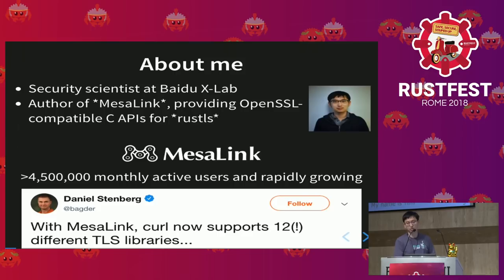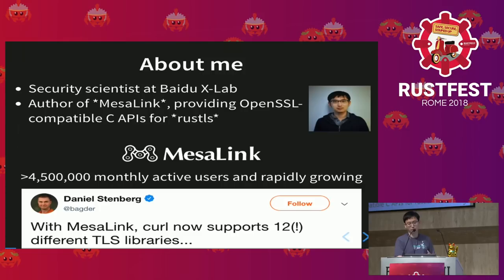It's rapidly growing — very fast. In August, we managed to contribute code to the Curl project. Mesalink is currently one of libcurl's 12 TLS backends. It is also one of the seven backends that support TLS 1.3, and it is the only one written in Rust.